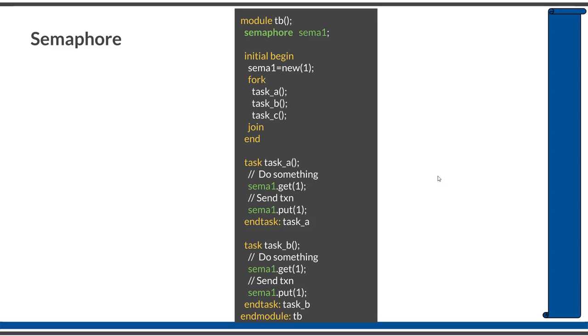You have seen semaphores and their usage. The important thing is to always use get and put in a pair within a set of processes. If someone is taking the key, don't forget to put the key back after performing the required functionality.